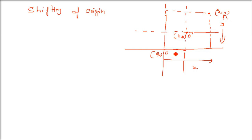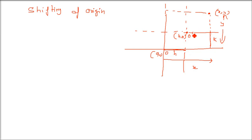Now, what is x,y with respect to h,k? x,y was with respect to (0,0). Now what is x,y with respect to h,k? So h is this distance and k is this distance. Similarly, the way we represented x,y, it will be h and k.